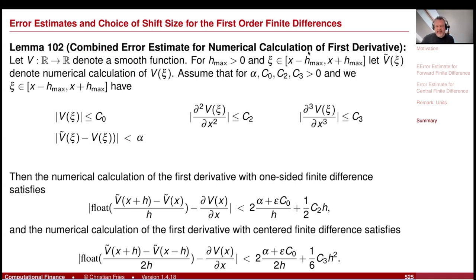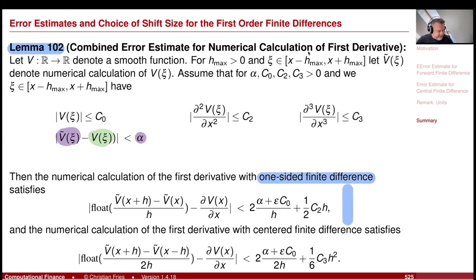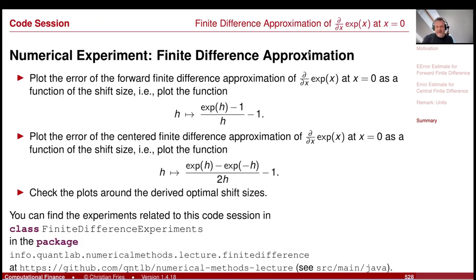Here are now the results of our session on this error estimate, summarized in a lemma. You see all these bounds again: a bound on the function value, a bound on the second derivative, a bound on the third derivative, and our bound on the function implementation alpha — the difference between the function implementation and the true value of the function. We summarize the results for the one-sided finite difference and the central finite difference. That was it for approximation of the partial derivative via finite differences. You find all the code in our lecture repository.